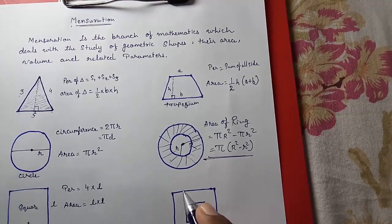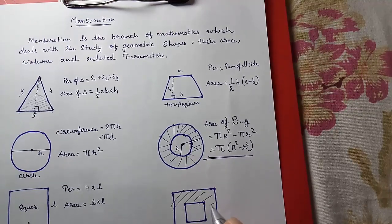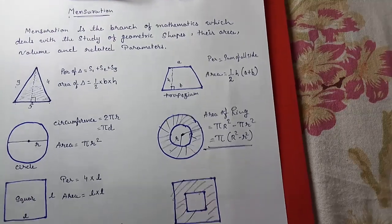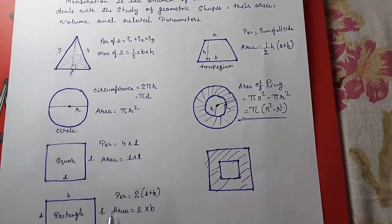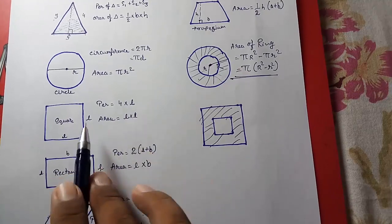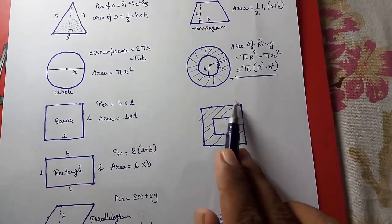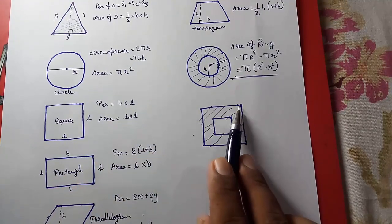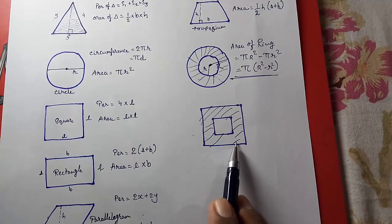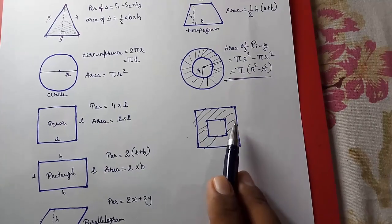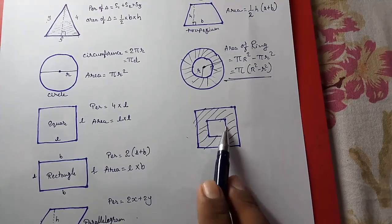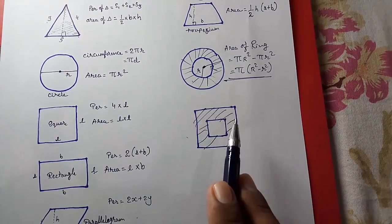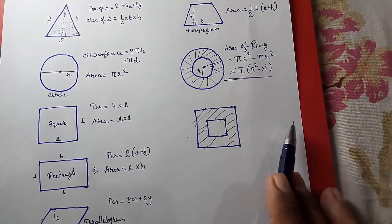Here also, if you want to find the area of a path around a rectangle or square, you cannot directly find it. You have to first find out the area of the whole figure, then find out the area of the inner part, and then subtract the inner part from the whole part. This way you can find out the area of the path.